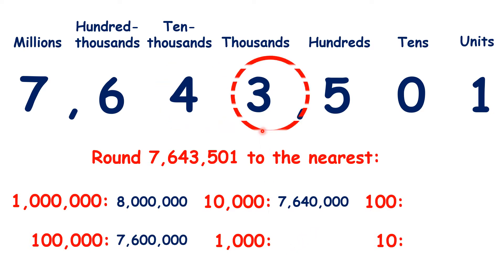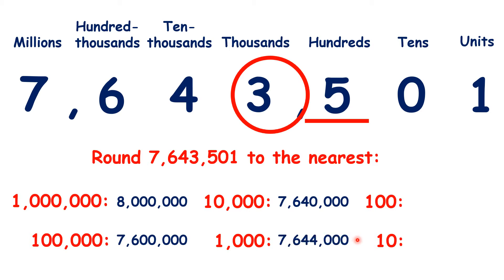To the nearest thousand, we look to the hundreds, and we have a 5 in the hundreds, so we're rounding up, so that makes 7,644,000.